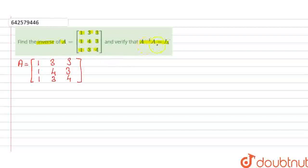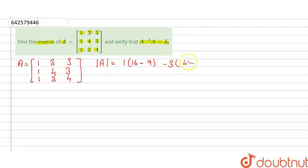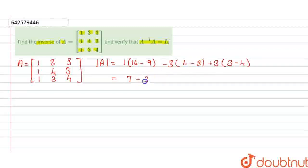So first for inverse, we need to find out its determinant. Determinant of A is equal to 1 into (4×4 = 16 minus 3×3 = 9) minus 3 into (1×4 = 4 minus 1×3 = 3) plus 3 into (1×3 = 3 minus 1×4 = 4). This will be equal to 16 minus 9 minus 3×1 minus 3×(−1), so determinant of A is equal to 1.